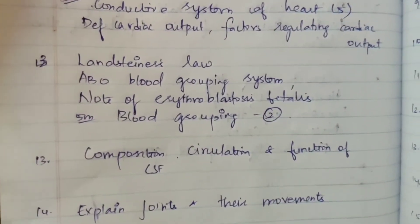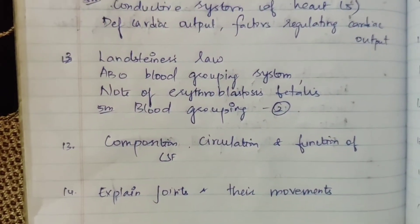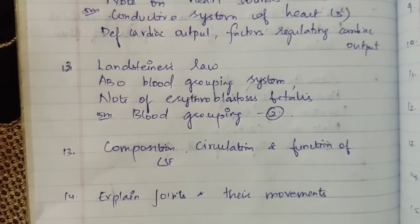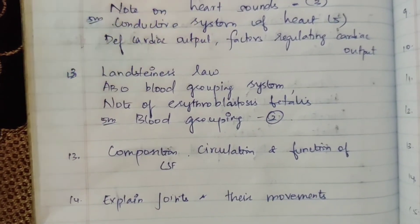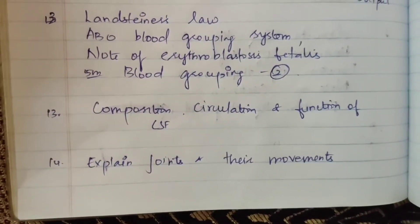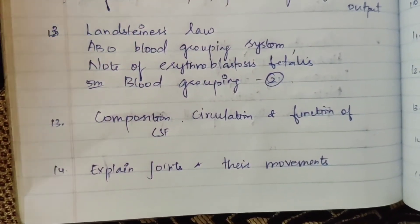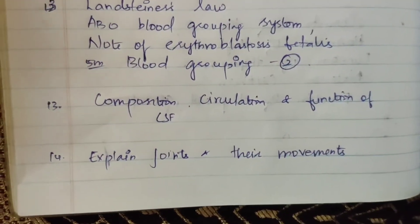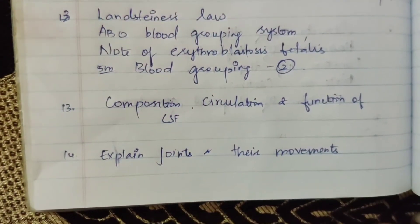Thirteenth question: Landsteiner's Law — define Landsteiner's Law and explain the ABO blood grouping system. Note on erythroblastosis fetalis — that is 15 marks and 5 marks. Blood grouping question appears two times. Next, composition of CSF, its circulation and function — Cerebrospinal Fluid. Fourteenth question: explain joints and their movements.